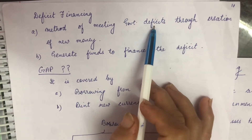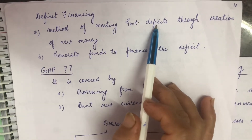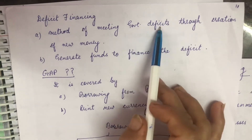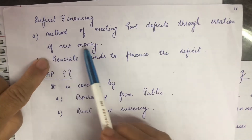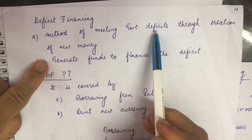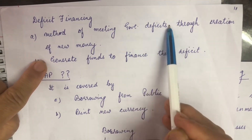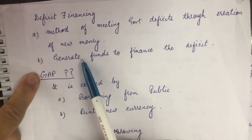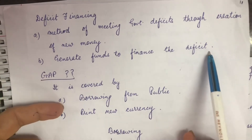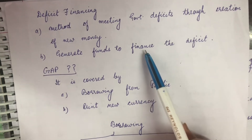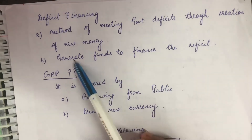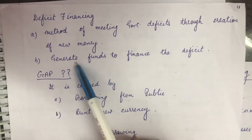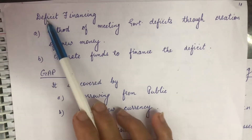The second definition of deficit financing: generate funds to finance the deficit. Again, there is a gap that needs to be filled. Funds come from various sources — you cannot fill it with books; until and unless you get money, you get the funds to fill that gap. So this is deficit financing.